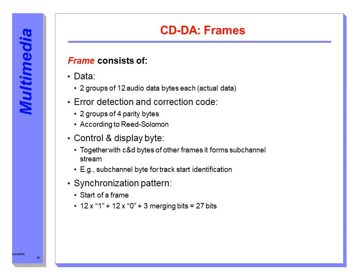Every 98 frames forms a block — note that sometimes blocks are also called frames. There is also a lead-in area and a lead-out area. The synchronization pattern in the frames determines the beginning of each frame. It consists of 12 ones, 12 zeros, and three filler bits, equivalent to 27 bits.